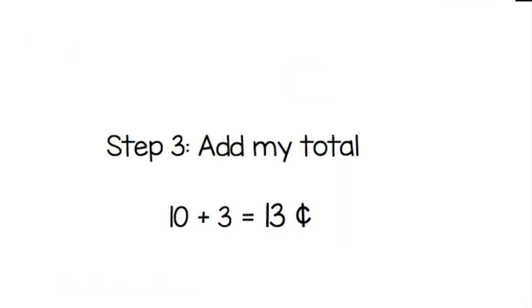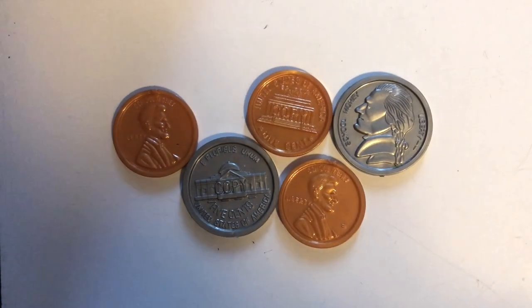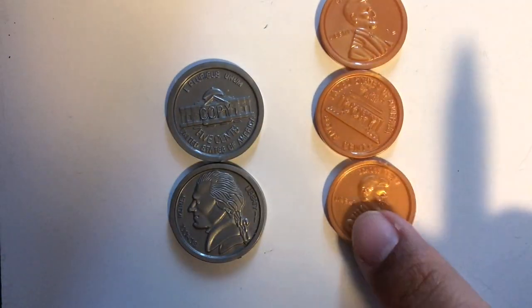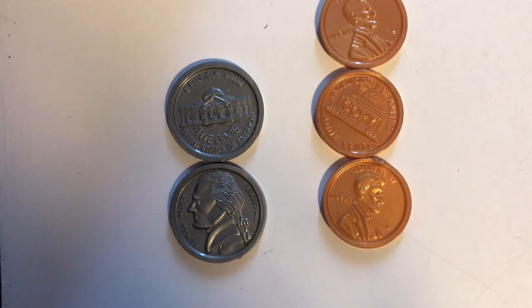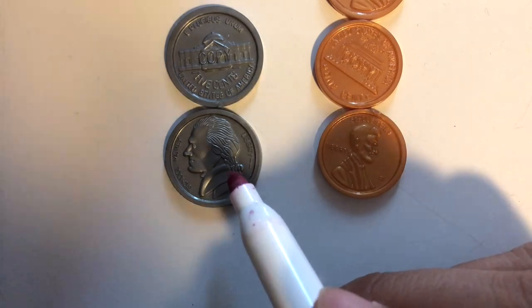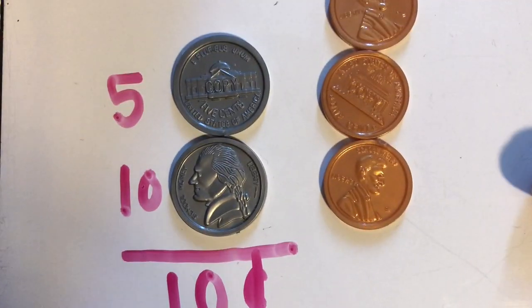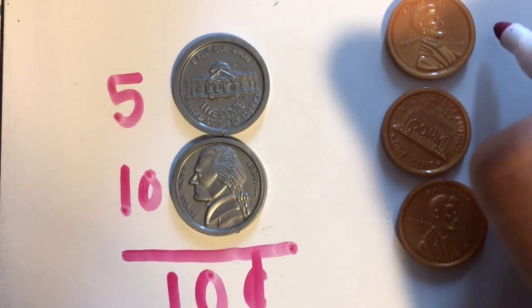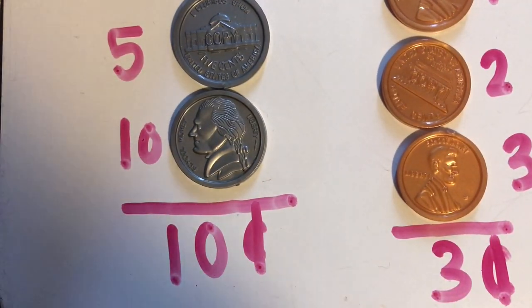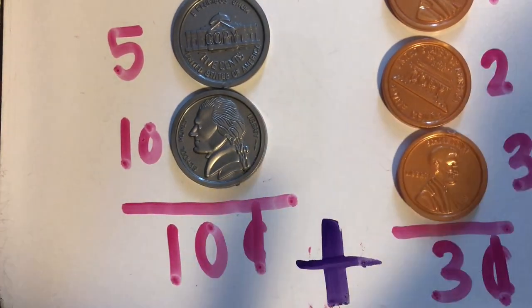Then we were ready for step three: add my total. We added our ten cents plus our three cents, and ten plus three equals thirteen cents. So our total was thirteen cents today. I want you to take on the challenge to take a picture or record yourself adding mixed coins. If you can only do four coins, that's okay, and if you want to challenge yourself with more, you can. Send your videos or pictures to Miss Lucy on Facebook or through message.